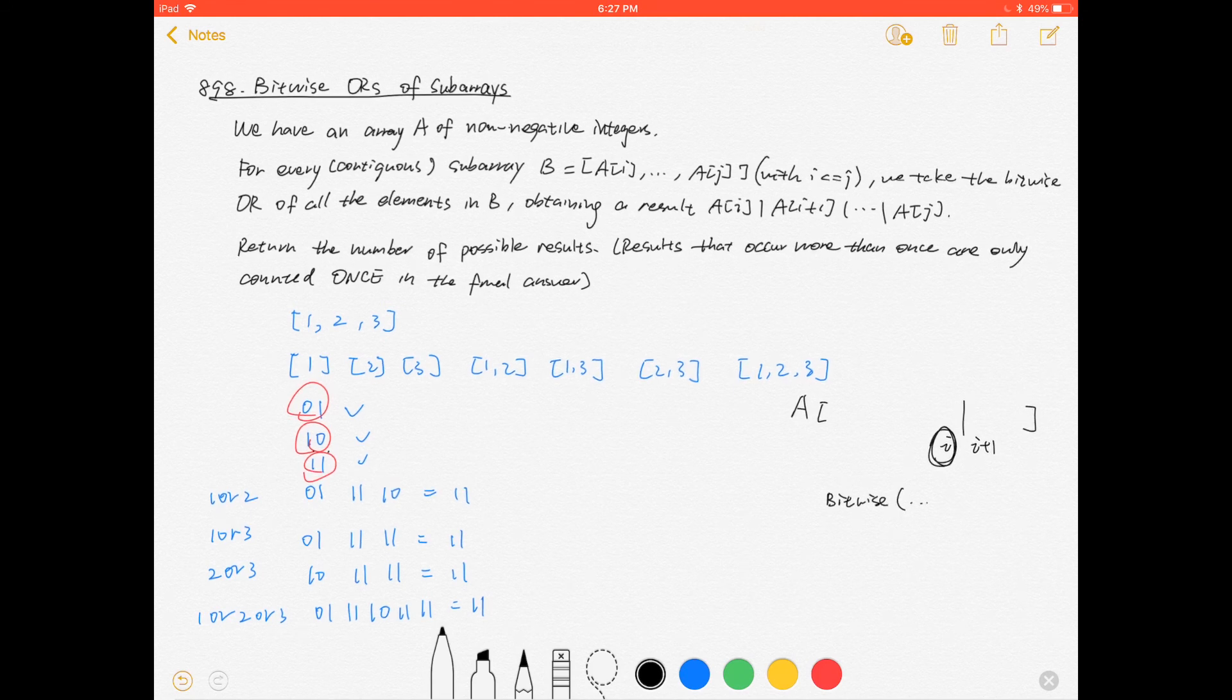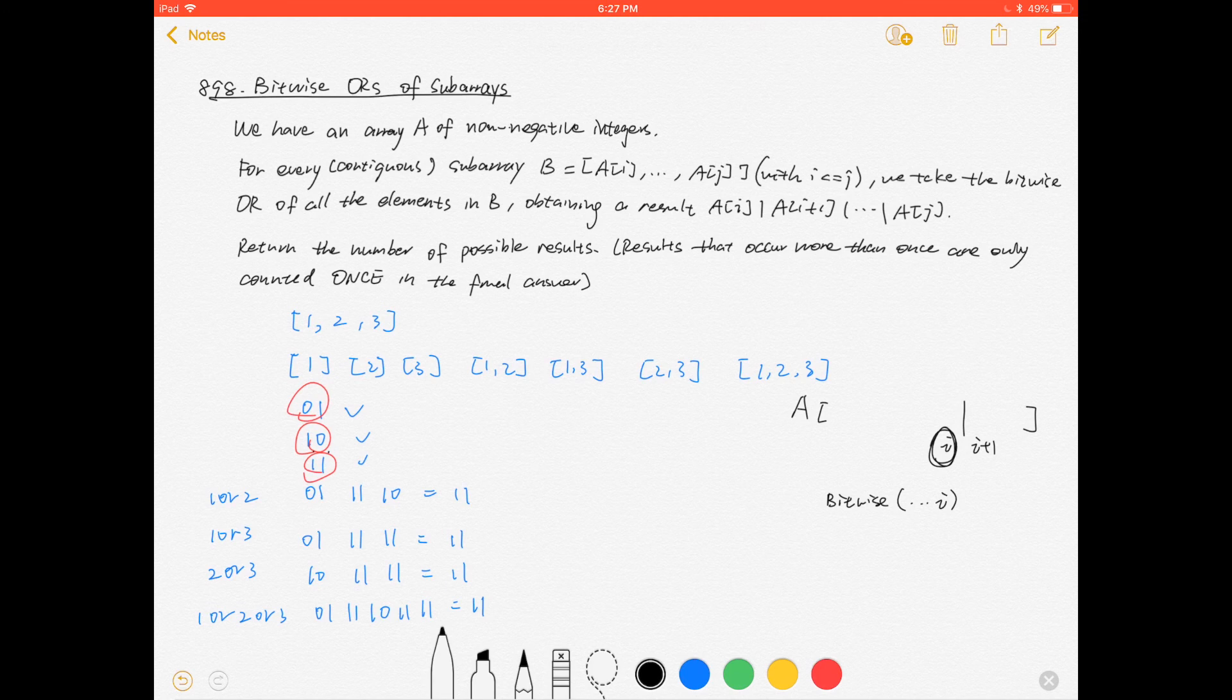For the previous array ending at i, we'll generate different results. All the subarrays with the elements we pick from a[0] to a[i], when we OR them together, should give different results, and we keep all unique results in a hash set.